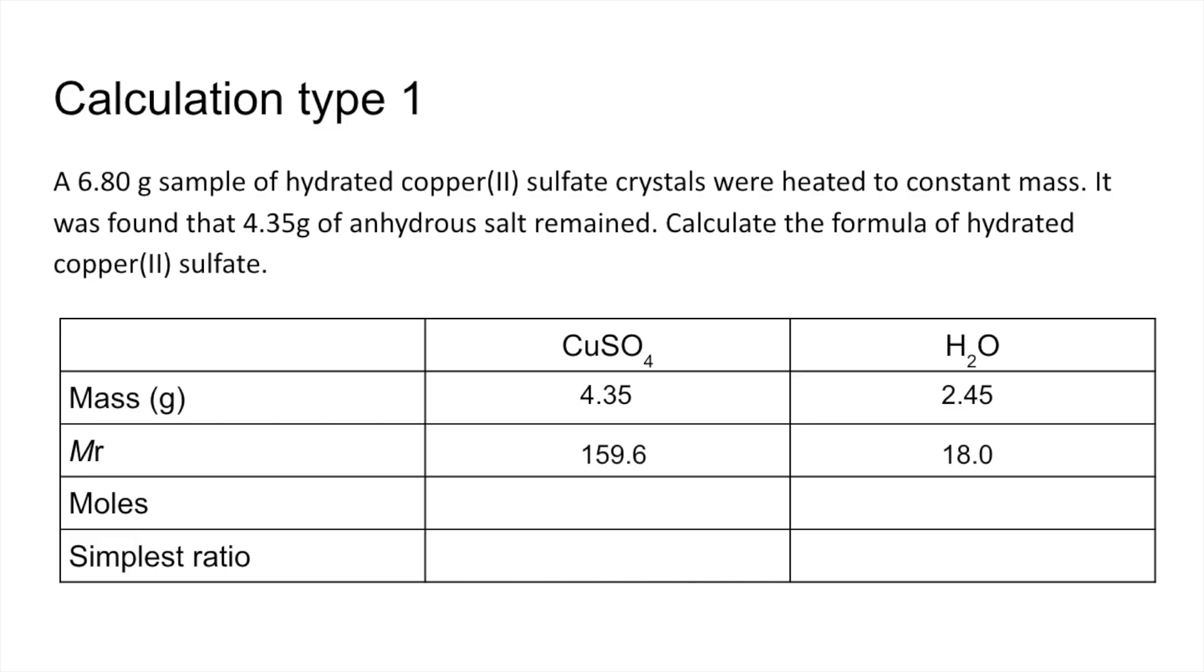We divide by the MR of those two substances, so 159.6 and 18. That's going to give us the moles of each substance. And then we just divide by the smallest to get the ratio, coming at 1 to 4.99, so in other words 1 to 5. So the formula, the dot formula for this, will be CuSO₄·5H₂O. Fairly straightforward, hopefully.